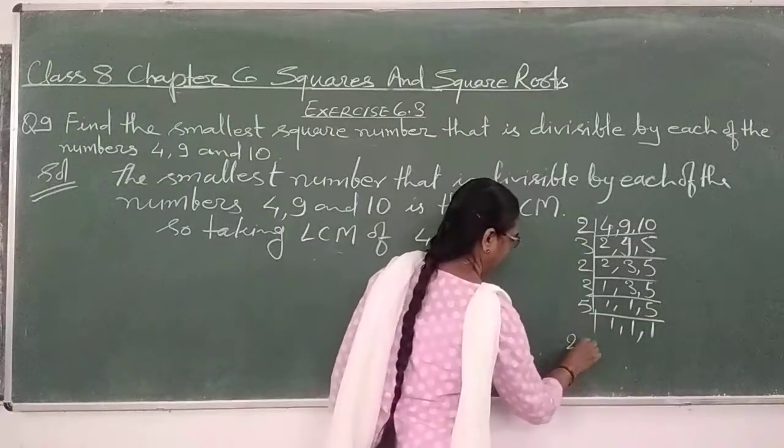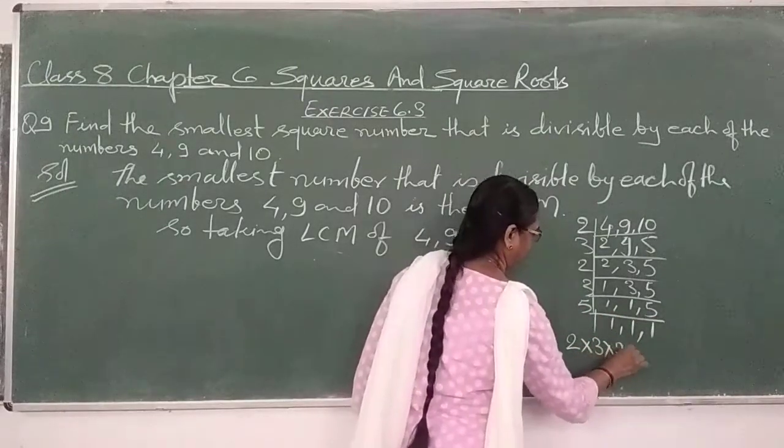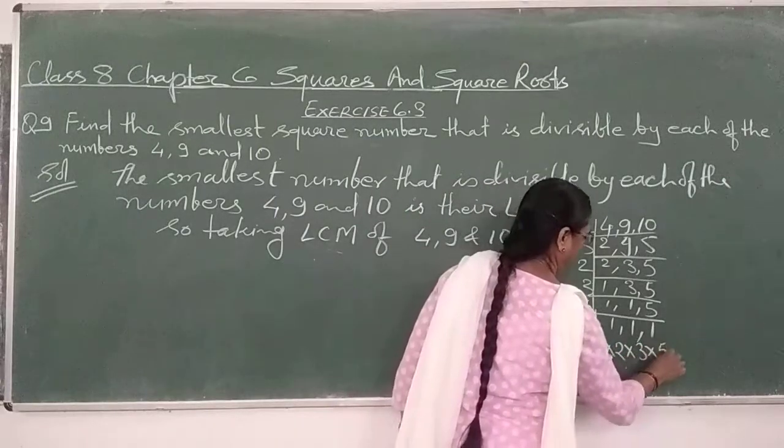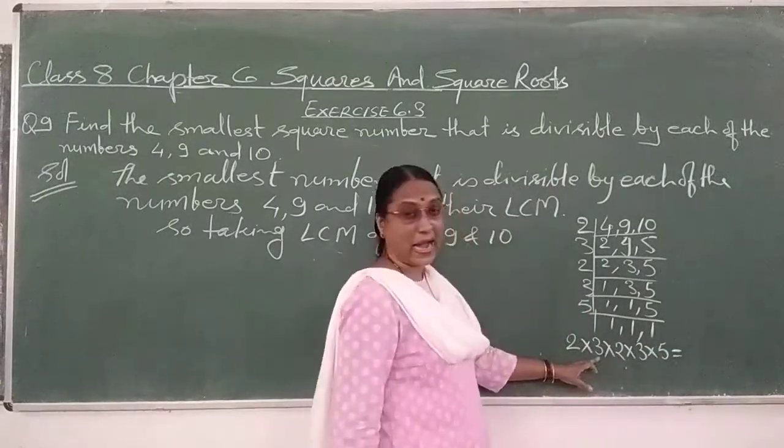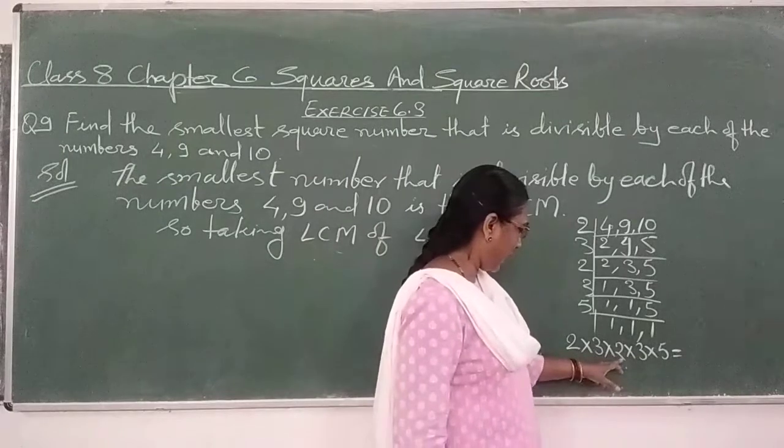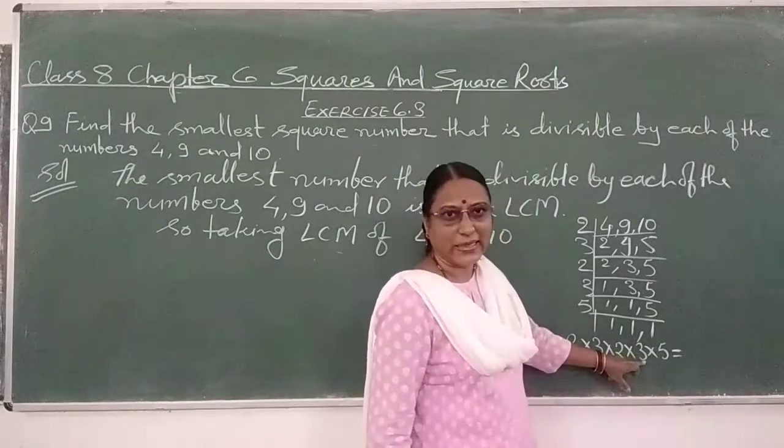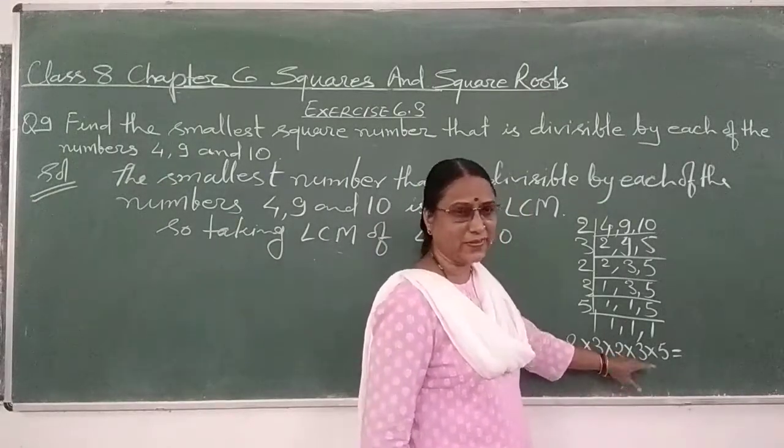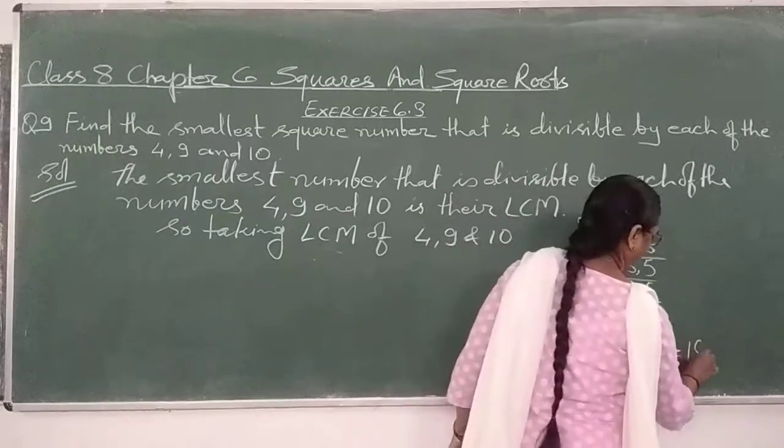So, LCM is 2 into 3 into 2 into 3 into 5. 2, 3 is a 6, 6 is a 3, 3 is a 36. 36, 5 is a 1, 18.